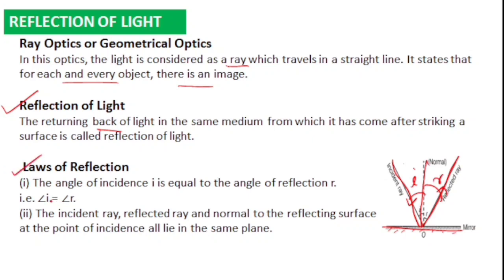There are two laws of reflection. First: the angle of incidence is always equal to the angle of reflection at every point on the reflecting surface. Second: the incident ray, reflected ray, and normal to the reflecting surface at the point of incidence all lie in the same plane.